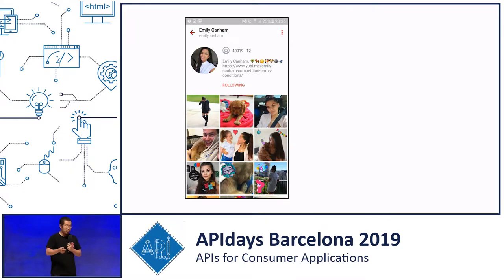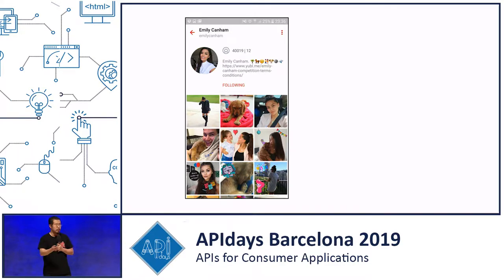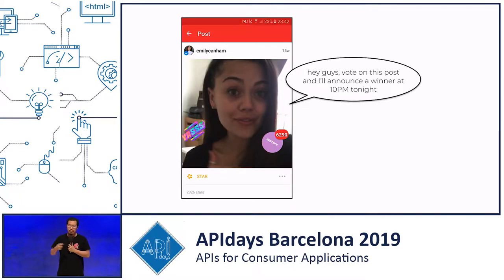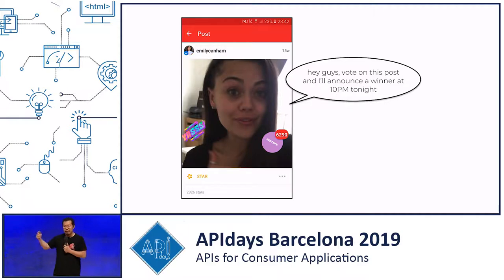Well, when we consider that Yubble is an early-stage startup — a small social network with about a million people on the platform — we already had some influencers from other platforms join us. Emily, for example, was one of our top users with about 50,000 followers. Many of these influencers would run campaigns on our platform where Emily would say, 'Hey guys, vote on this post, and at 10 o'clock I'm going to announce the lucky winner for this designer handbag.'